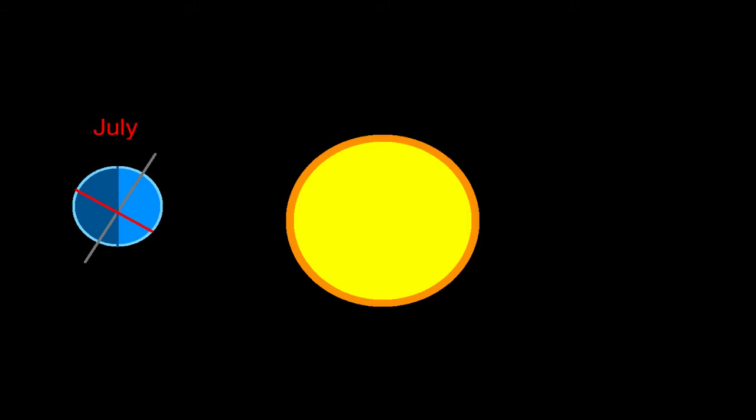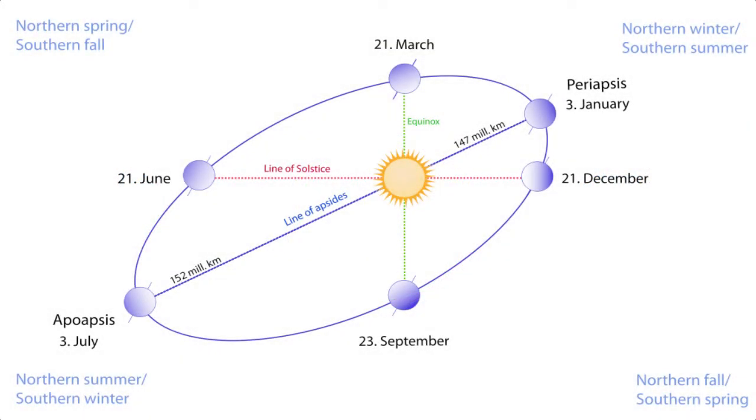In the middle of the year, the northern hemisphere is tilted towards the Sun, making the days longer, and at the end of the year, it's tilted away from the Sun, making the days shorter. This is the same reason we have seasons.